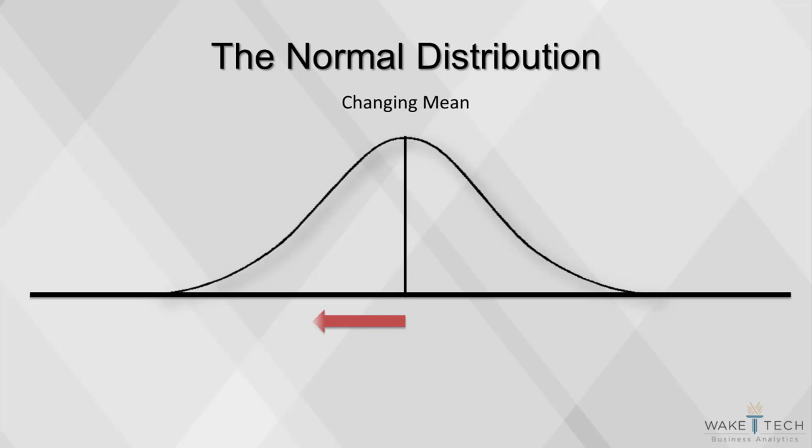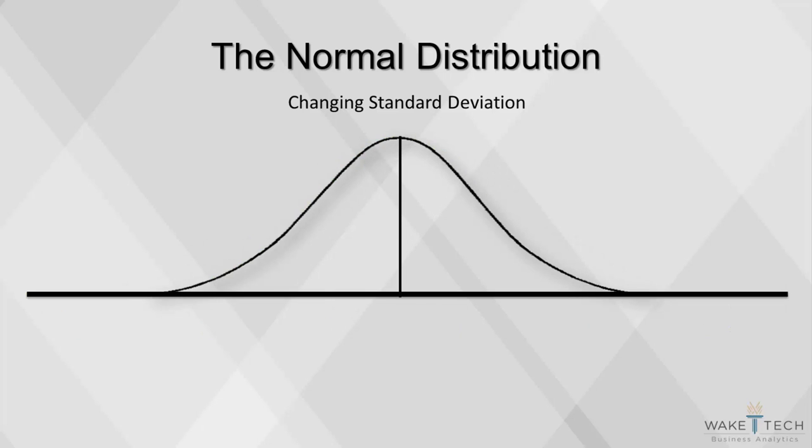By changing the mean, the normal curve shifts to the left or right. By changing how spread out the standard deviations are, the curve also changes. Standard deviations can be spread out wider or closer together.